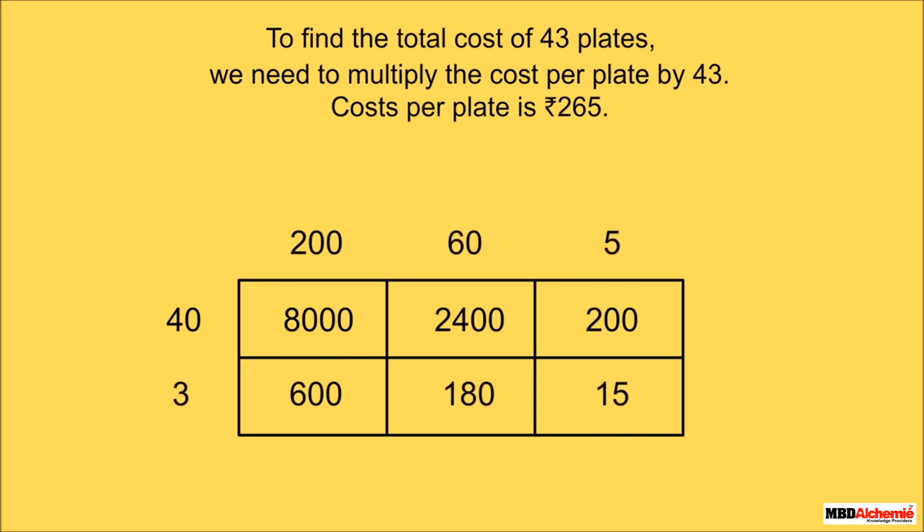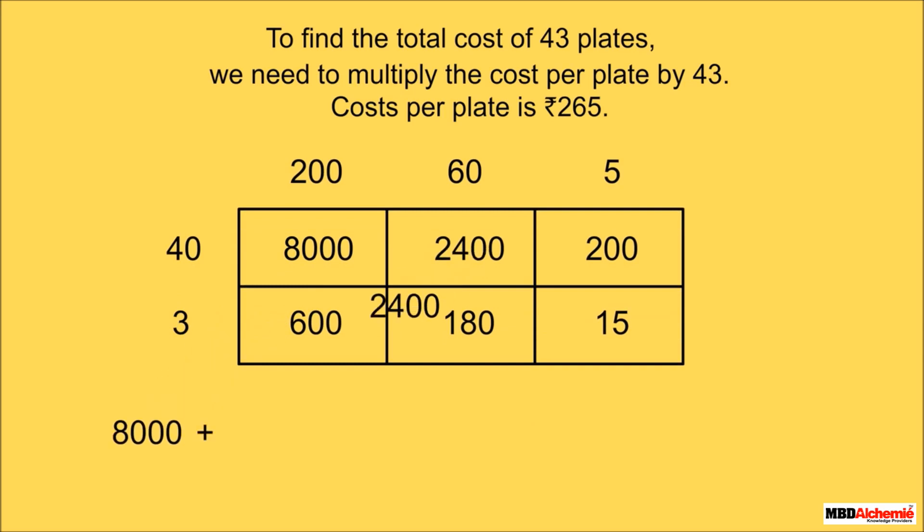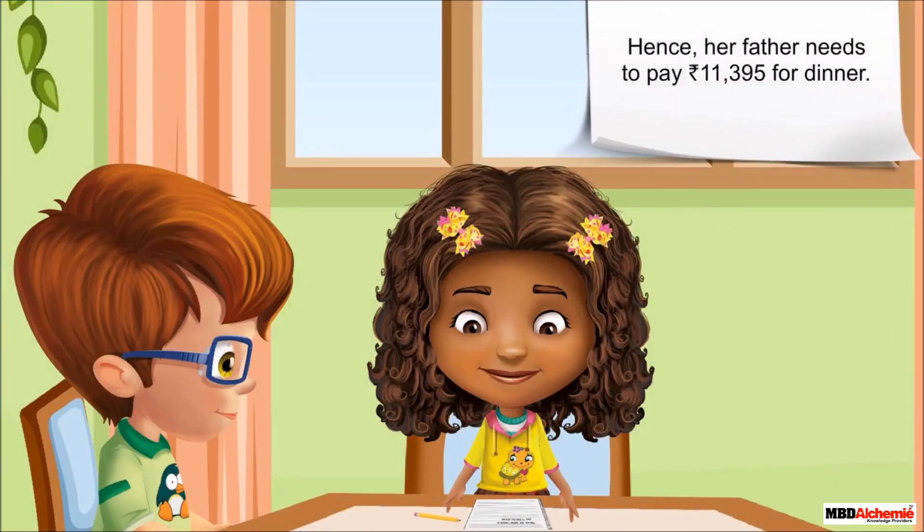Now, she adds all the products obtained by multiplying the numbers. That is, 8000 plus 2400 plus 200 plus 600 plus 180 plus 15 is equal to 11,395. Hence, her father needs to pay ₹11,395 for dinner.